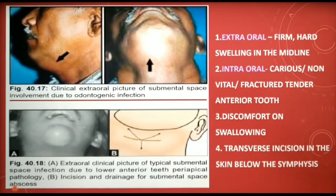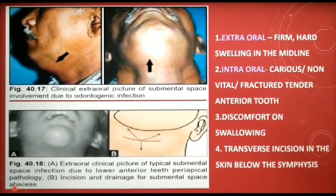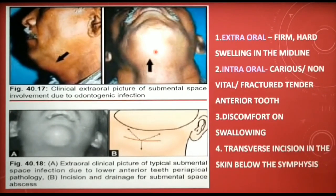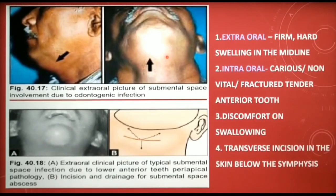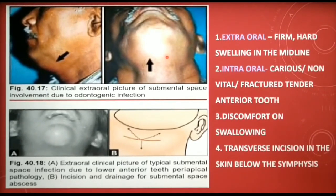Extraoral findings include a distinct firm swelling in the midline beneath the chin. The skin overlying the swelling is hard and taut, and fluctuation may be present. Intraoral findings include anterior teeth that are non-vital, fractured, or carious. The offending tooth may exhibit tenderness to percussion and mobility. The patient will also experience considerable discomfort on swallowing.